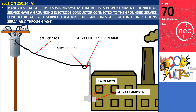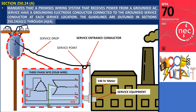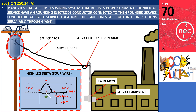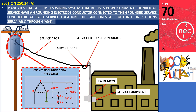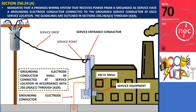The guidelines are outlined in Sections 250.24(a)(1) through (a)(4). If the premises wiring is supplied by a service AC system — such as a single-phase 3-wire system, a three-phase Y 4-wire system, a high-leg delta 4-wire system, or a corner-grounded delta 3-wire system — the grounding electrode conductor should be connected at the service location, following the guidelines in 250.24(a)(1) through 250.24(a)(4).